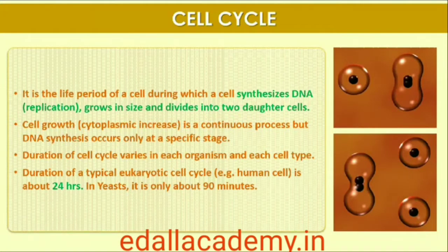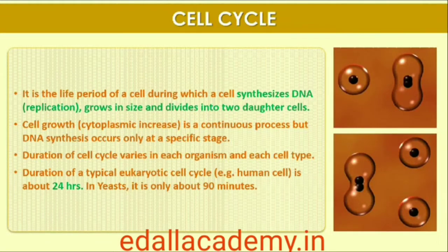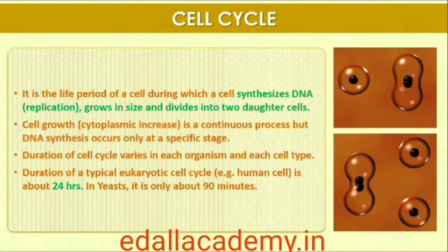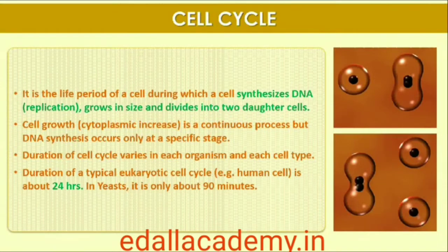A typical eukaryotic cell cycle is illustrated by human cells in culture. These cells divide once in approximately every 24 hours. However, this duration of cell cycle can vary from organism to organism and also from cell type to cell type. Yeast, for example, can progress through the cell cycle in only about 90 minutes.